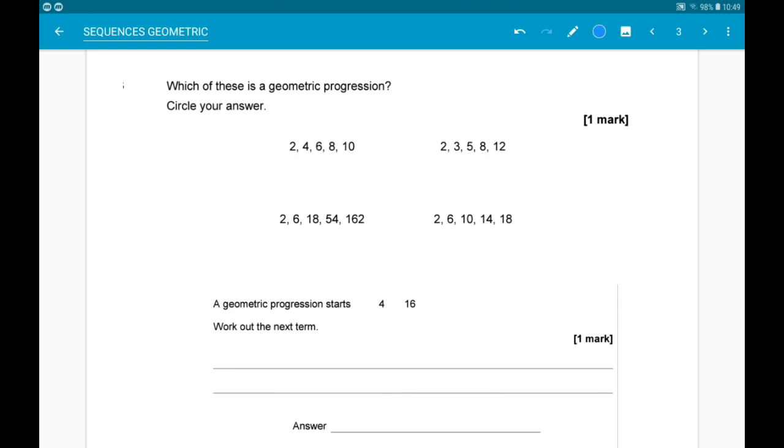Then, we have 2, 6, 18, 54. In that we are multiplying by 3 each time, so that is geometric.